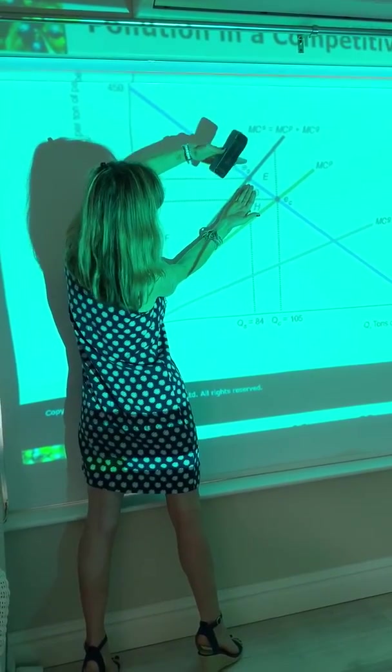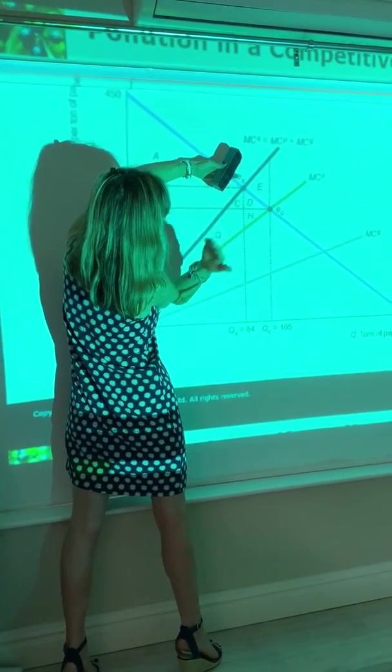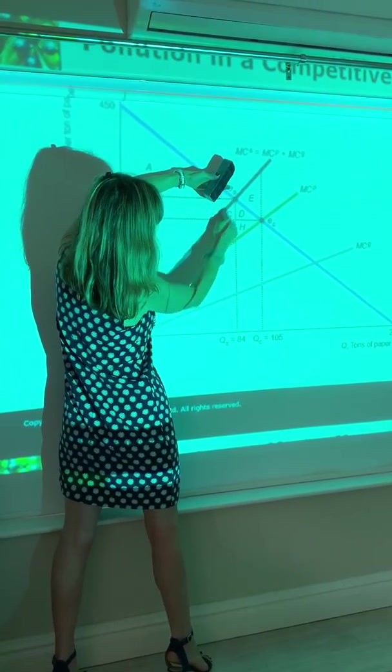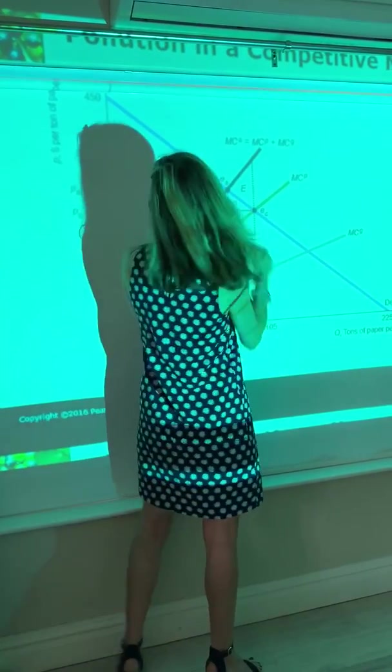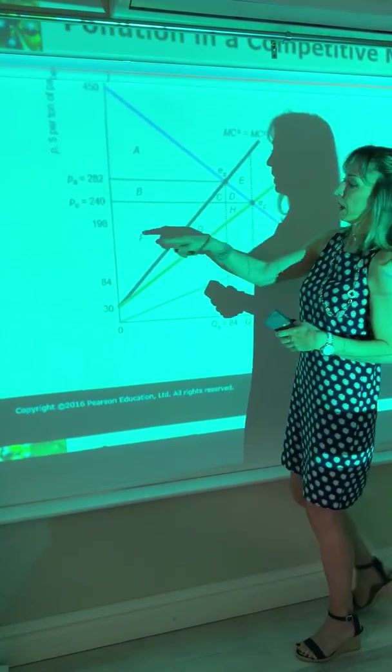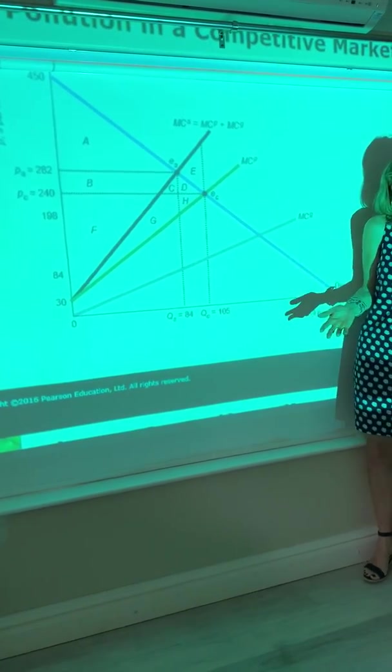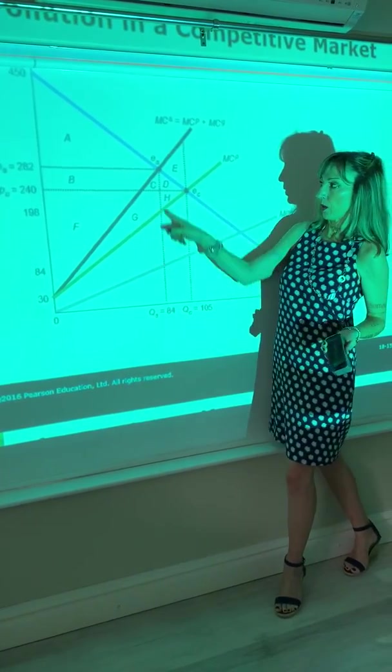Another way to see that is it's the area below the price line and above your social marginal cost, which gives you area B and F. And if you add areas A and B and F, you get your social welfare associated with this equilibrium.